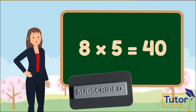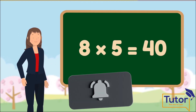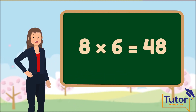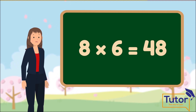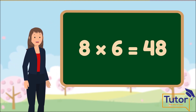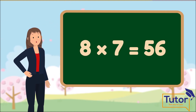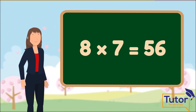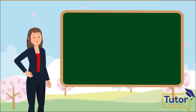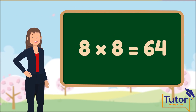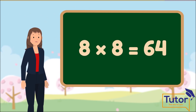8 times 5 is equal to 40. 8 times 6 is equal to 48. 8 times 7 is equal to 56. 8 times 8 is equal to 64.